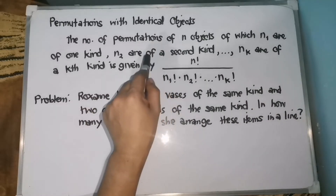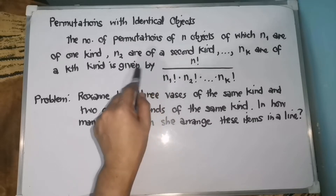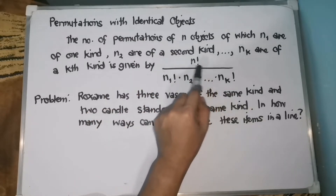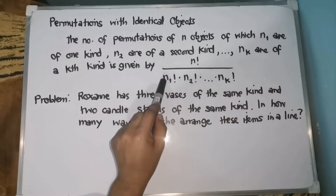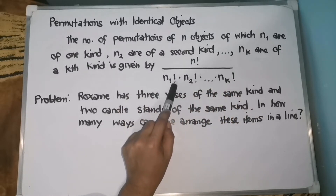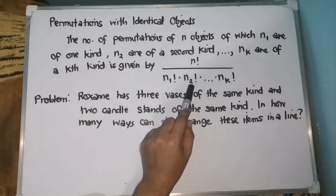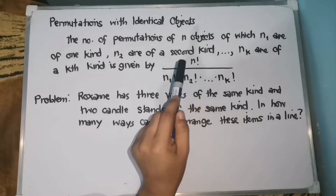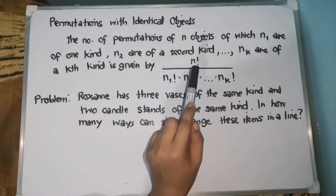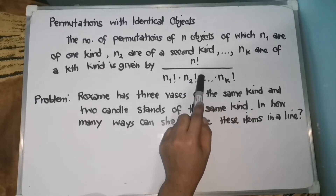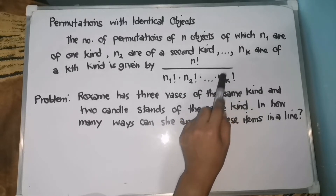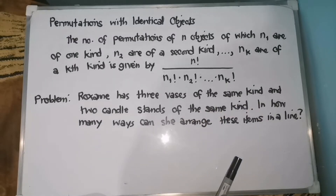Therefore, yung mga objects natin dito na given ay identical. The formula is n factorial — which is the total number of items given — all over n sub 1 factorial, that is the first kind, times n sub 2 factorial, that is the same kind, and then times ellipses, times n sub k factorial. So k denotes kung ilan yung given nating objects.